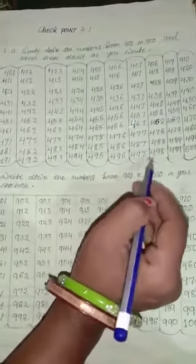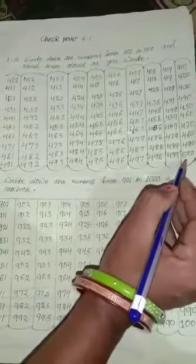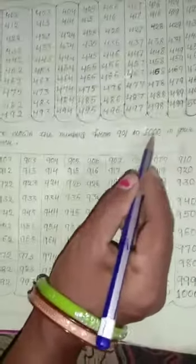496, 497, 498, 499, 500. Start number B: Write down the numbers from 901 to 1000 in your notebook.